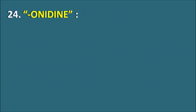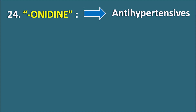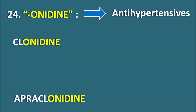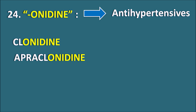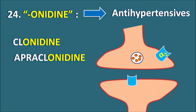The 24th suffix is Onidine. Onidine indicates they are antihypertensive agents. We have two drugs: Clonidine and Apraclonidine. These are centrally acting antihypertensives that act as agonists on adrenergic receptors yet decrease adrenergic transmission. Within the CNS, adrenergic receptors are present both presynaptically and postsynaptically. When epinephrine is released from storage vesicles, it acts on postsynaptic receptors to produce adrenergic transmission, but some mediators act on the presynaptic alpha-2 receptors, which are auto-inhibitory in nature.